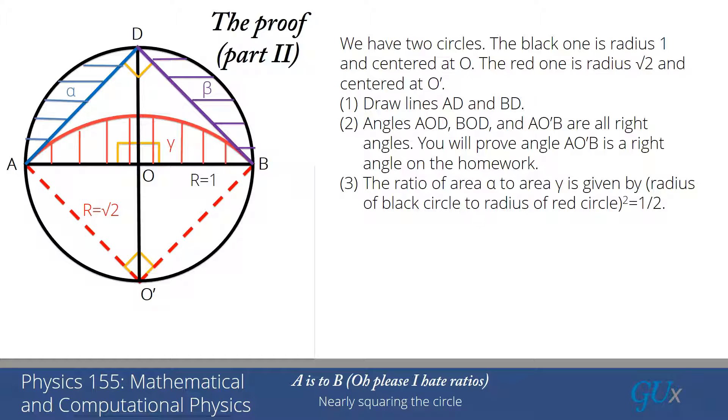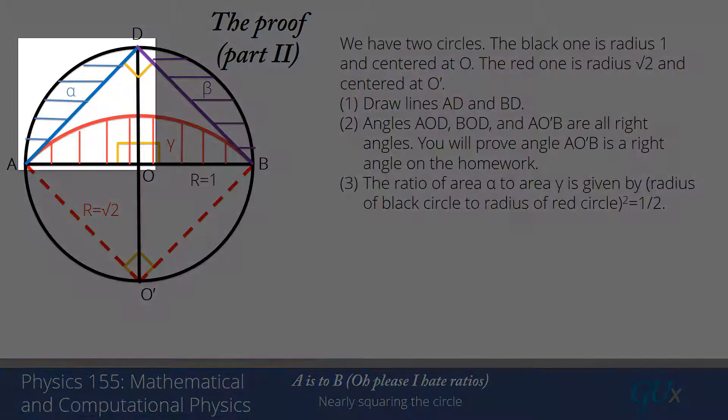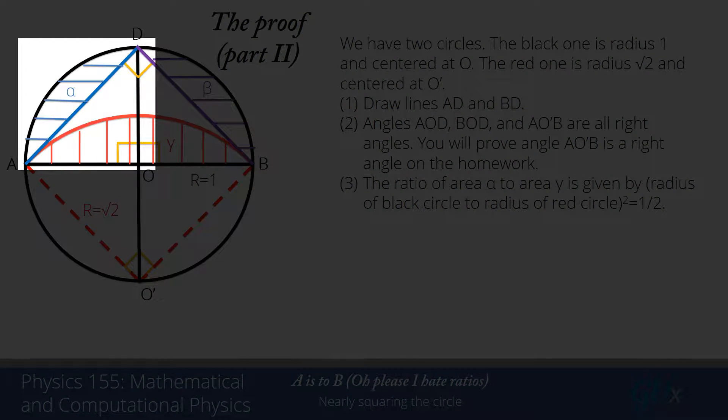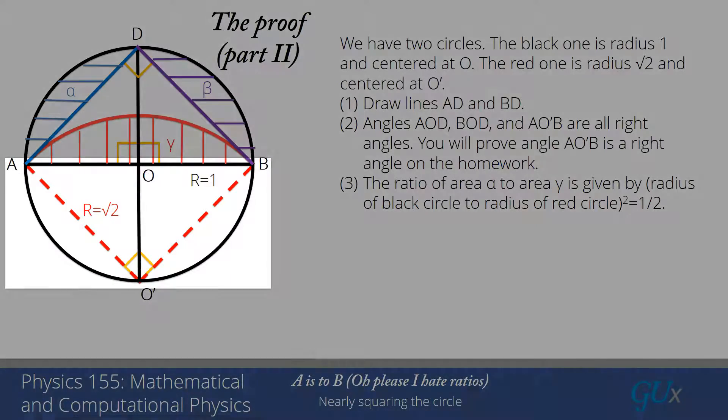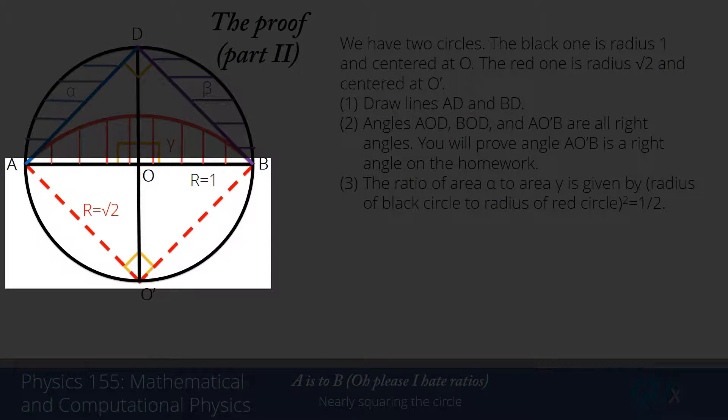The radius of the black circle is 1. The radius of the red circle is square root of 2. So the ratio of those areas is 1 over square root of 2 squared, which is just 1/2. So you can see the area of alpha is 1/2 the area of gamma because each of those slices has the same angle. They're both 90-degree angles for those slices.